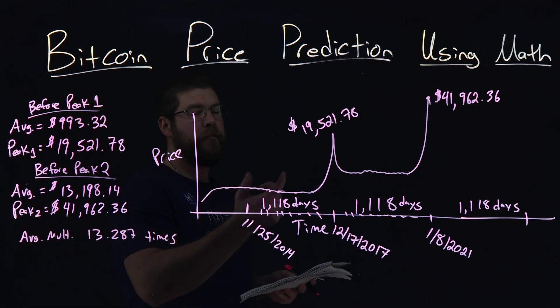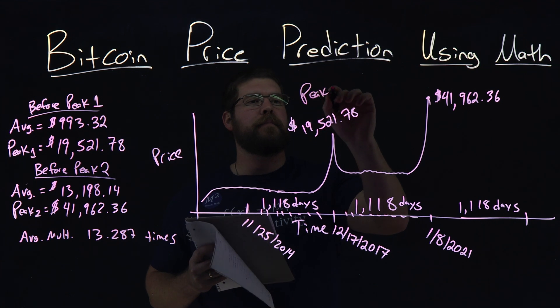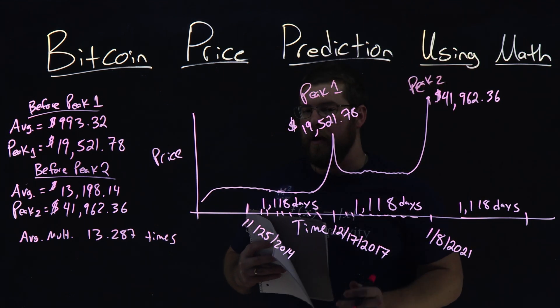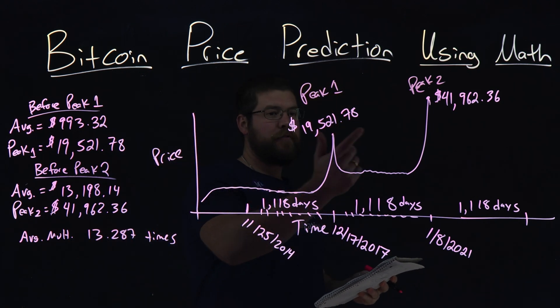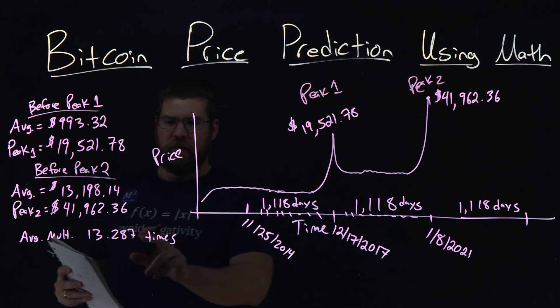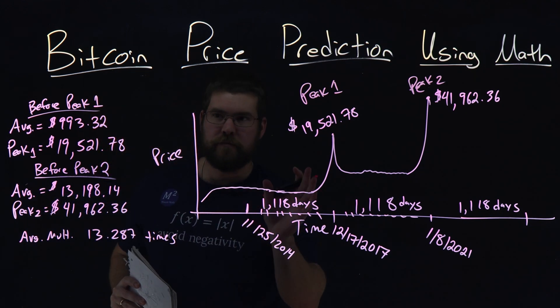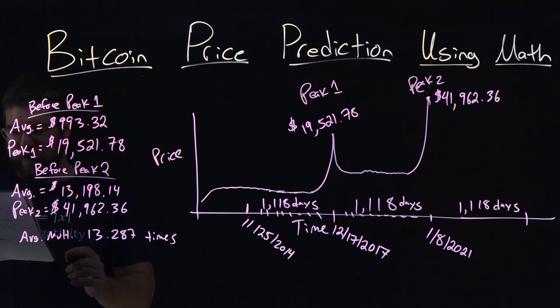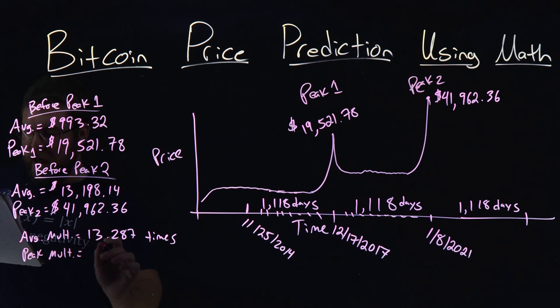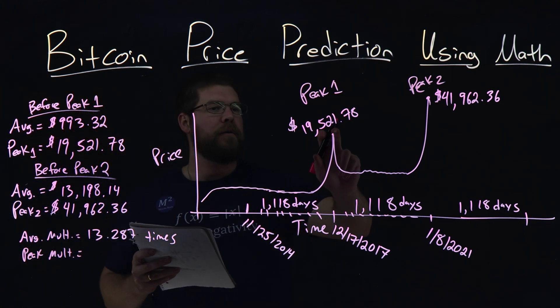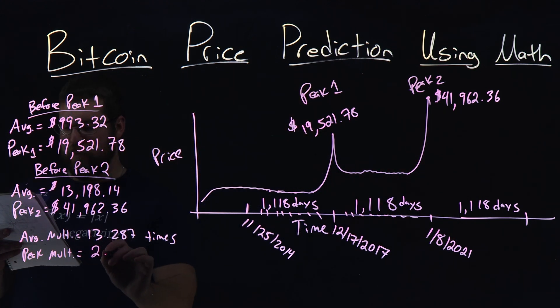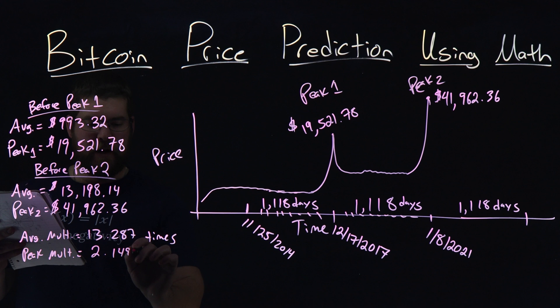Okay, so the average in the days before the first peak, peak one here, this is peak two. The average was from right after peak one, so before peak two, was 13 times roughly greater than the average before peak one. So that's the average multiplier. Well, then I took the peak multiplier, and I did the same thing. This peak times what amount gave us this peak, peak two, and that gave a multiplier of 2.1495 times.